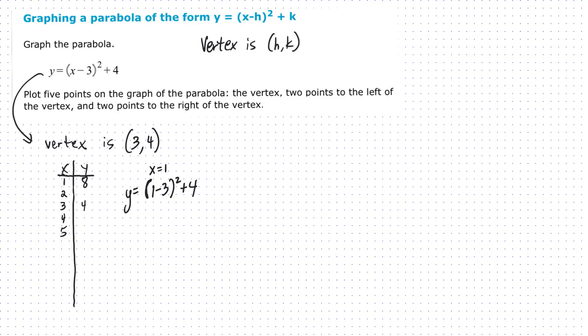What about x equals two? We get positive one plus four, which is five. How about x equals four? We still get positive one squared plus four. So we still get five. And then five, two quantity squared, we can once again, we're back at eight.